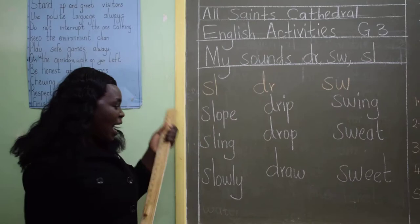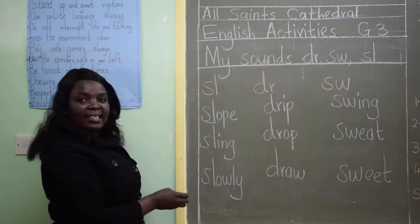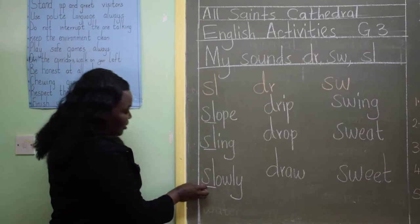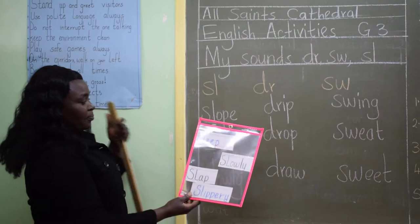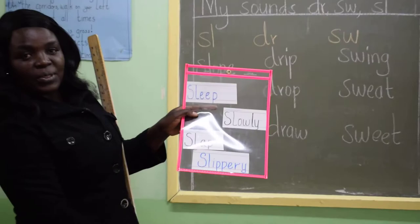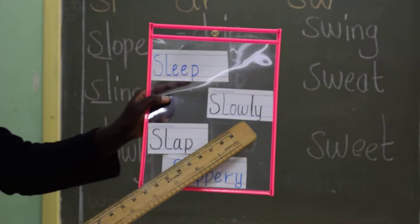If you look, you will find that we have S here — starting — there is S, L, S, L. And those are the blends that we have discovered in these words. I have more of them here. We have sleep. Can you see sleep? Sleep. Slowly, we talked about that already.